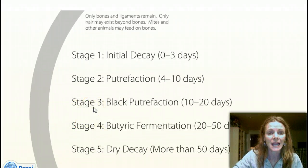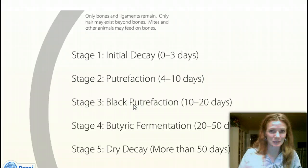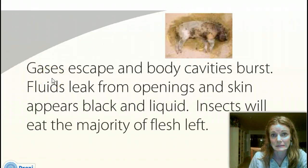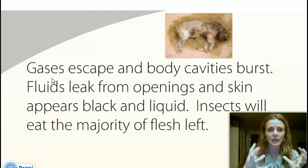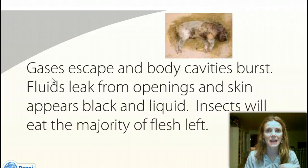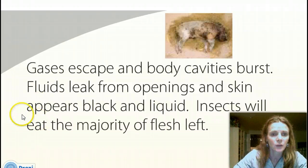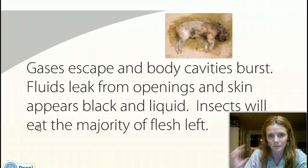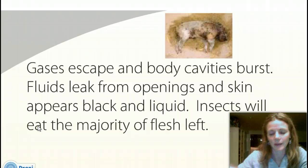Stage three is black putrefaction. The gases are going to escape — the body cavities start to burst, and fluids leak out. While this is happening, insects, maggots, and bacteria continue to break down flesh, ultimately creating gaping holes. The skin appears blackish-bluish, with liquid all around, and insects eat the majority of the flesh remaining. This is probably the grossest part of the decaying process.